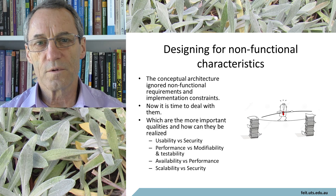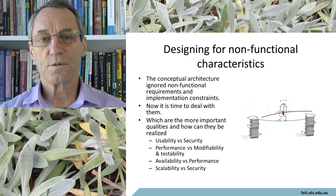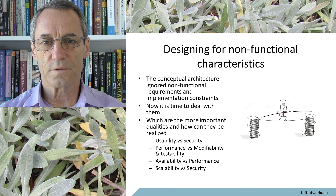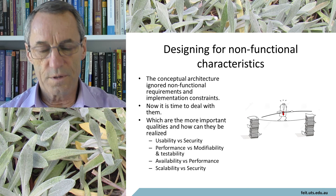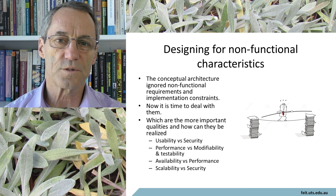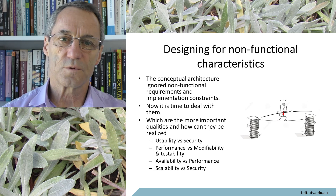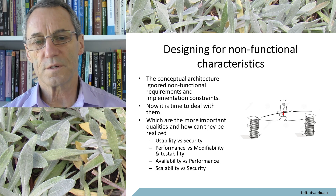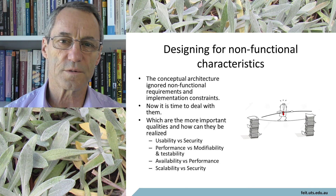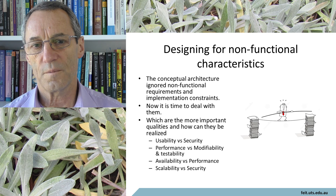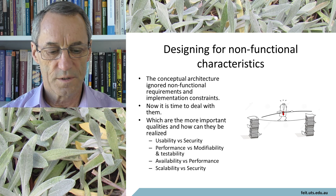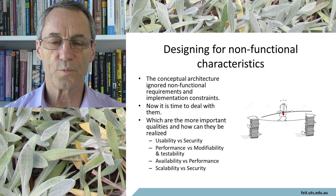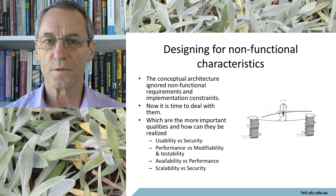Probably one of the more important things you have to do with an execution architecture is organize the components and structure of the architecture to get the best trade-off you can among the required non-functional characteristics. For example, security, which tries to restrict access, trades off against usability, which tries to encourage access. Or performance trades off against modifiability, or some concerns of scalability oppose some concerns of performance. These are the concerns you'll be reconciling and balancing when you implement an execution architecture.